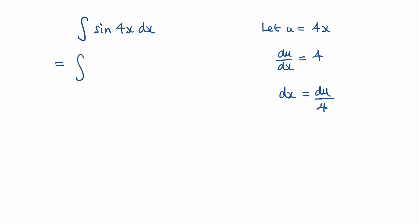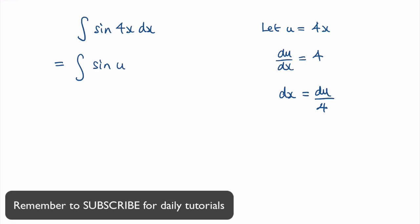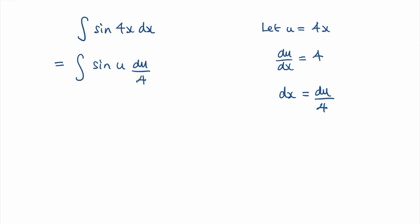We've got the integral of sin 4x, which is now sin u, and dx equals du over 4. This 4 is actually 1 quarter, and I can bring that outside the integral to give 1 quarter